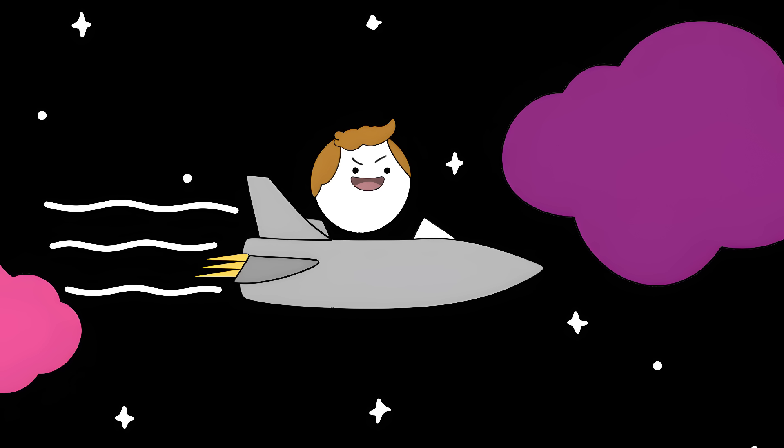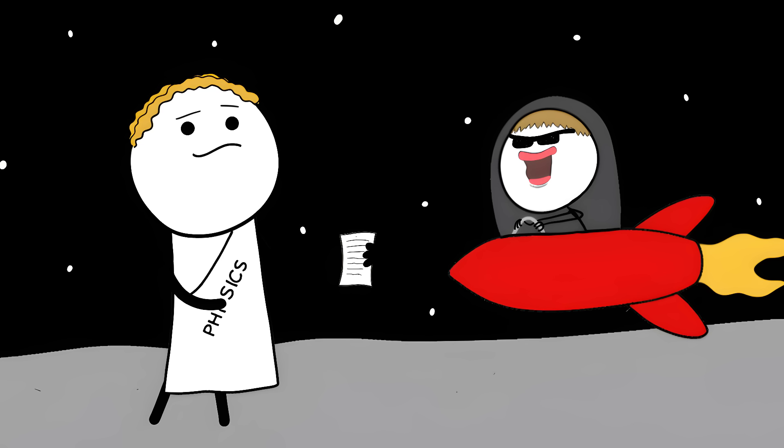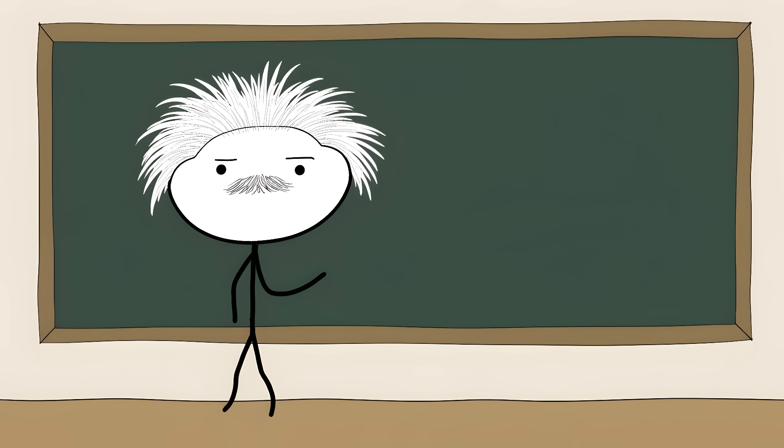Number 2. The Cosmic Speed Limit. The universe has a speed limit. 186,282 miles per second. And unlike your local highway patrol, this one's enforced by physics itself. Before Einstein came along, scientists thought you could just keep speeding up forever in space. But he figured out that weird things start happening when you try to go that fast.